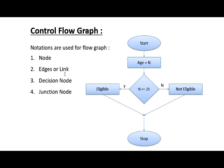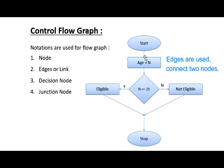Here in the example, start is the initial node. This arrow shows the connection between the start node and the next element. This is the edge, also called a link, between these two nodes. This is the initial node and this is the termination node.